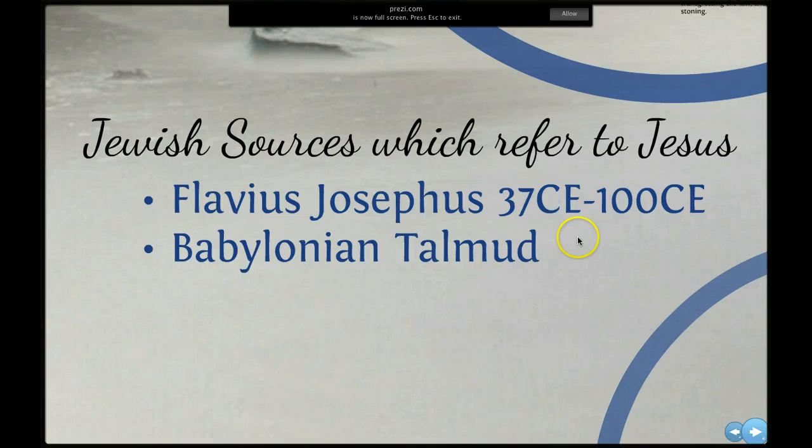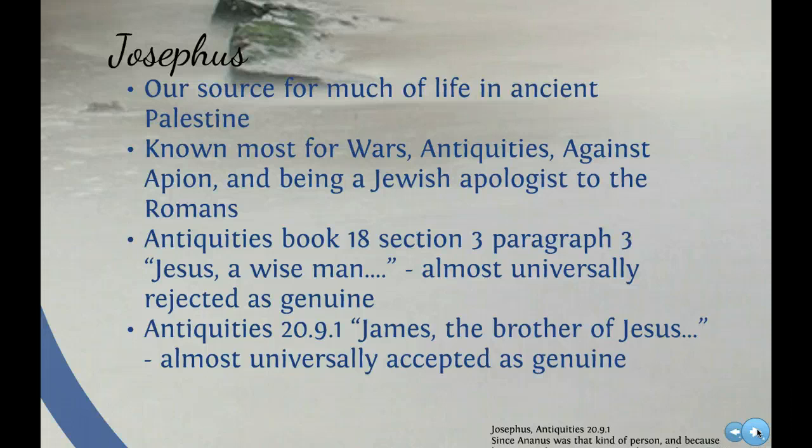And then we have the Babylonian Talmud. As for Josephus, he is our source for much of ancient life in Palestine. He's the only historian of Palestine in the first century, so naturally he informs us of a lot of things going on in the New Testament, although he doesn't mention very much about Jesus at all. He is known most for his works called The Wars, The Antiquities, and Against Apion, and for being a Jewish apologist to the Romans.